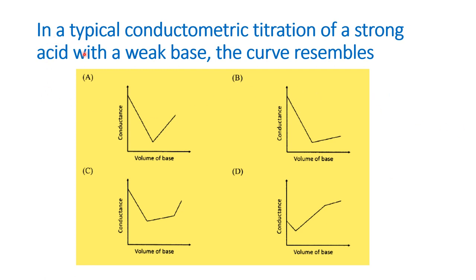Let us see the question first. In a typical conductometric titration of a strong acid with a weak base, the curve resembles — so in this question, they are asking what is the representation. There are four graphical representations given, and they are asking us to spot the one that matches with a strong acid and a strong base curve. Before that, we must first understand what conductometric titration is, how it is done, what are the advantages and disadvantages, and what precautions to take.